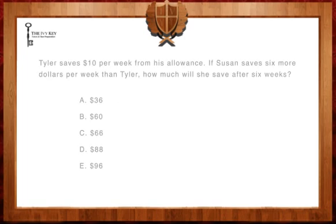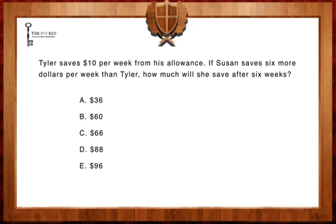A typical question found in the SHSAT will read: Tyler saves $10 per week from his allowance. If Susan saves $6 more per week than Tyler, how much will she save after 6 weeks?